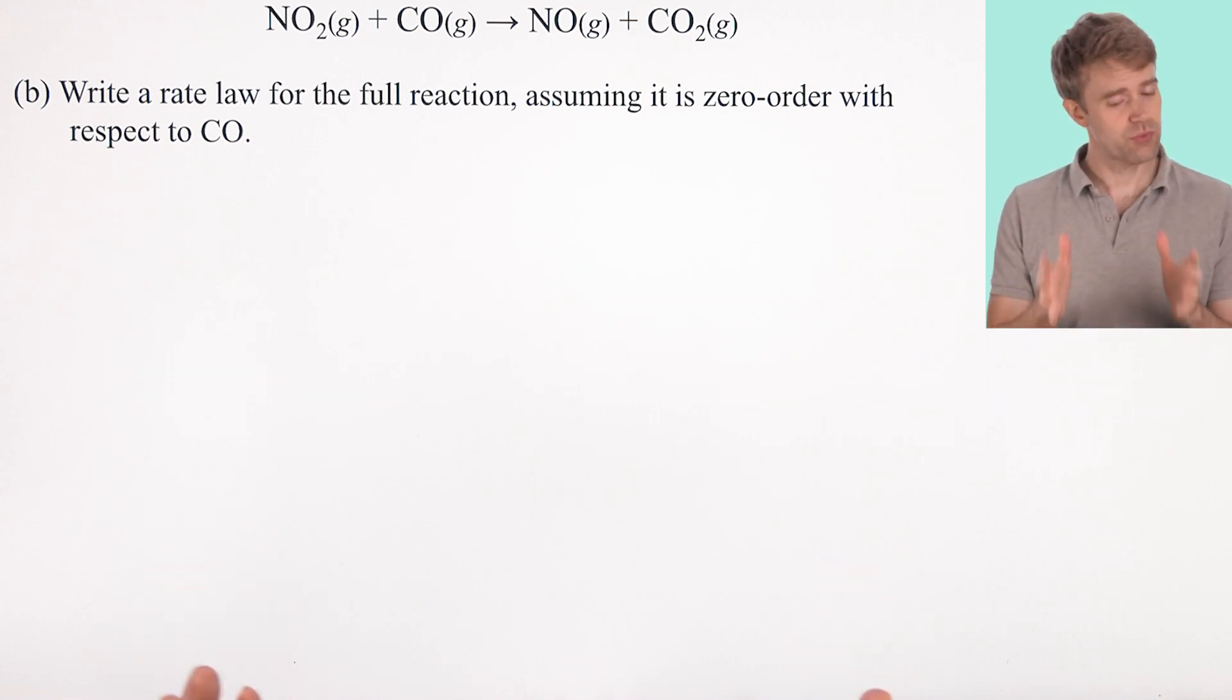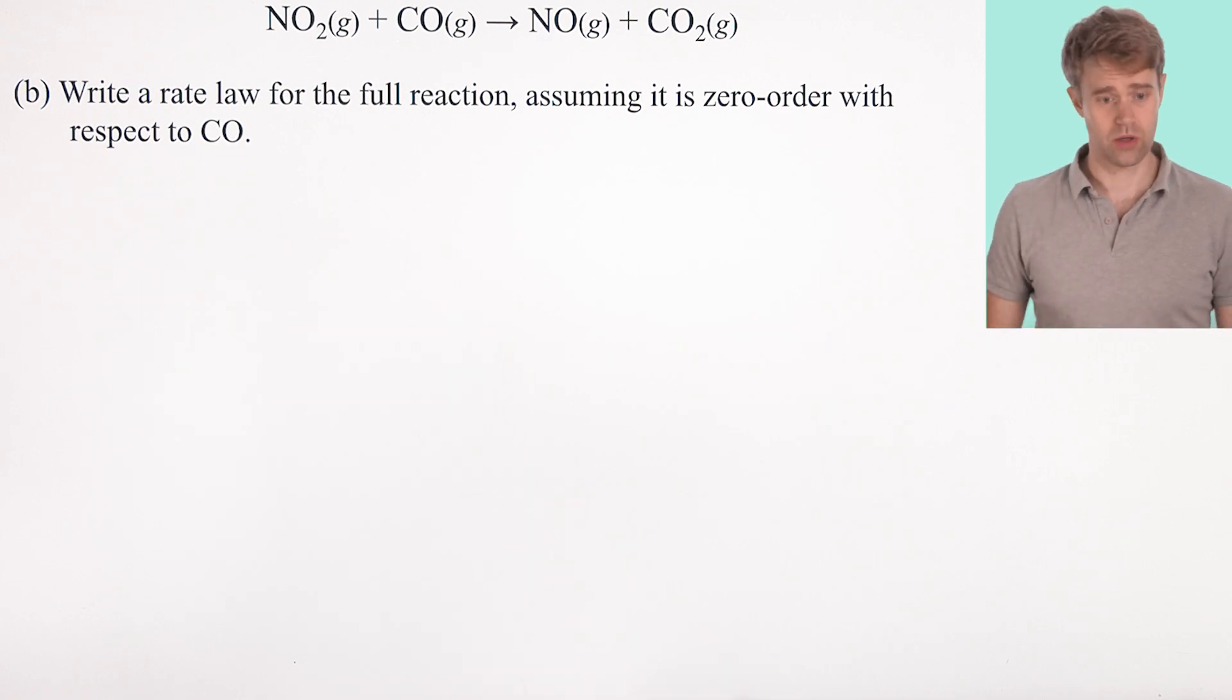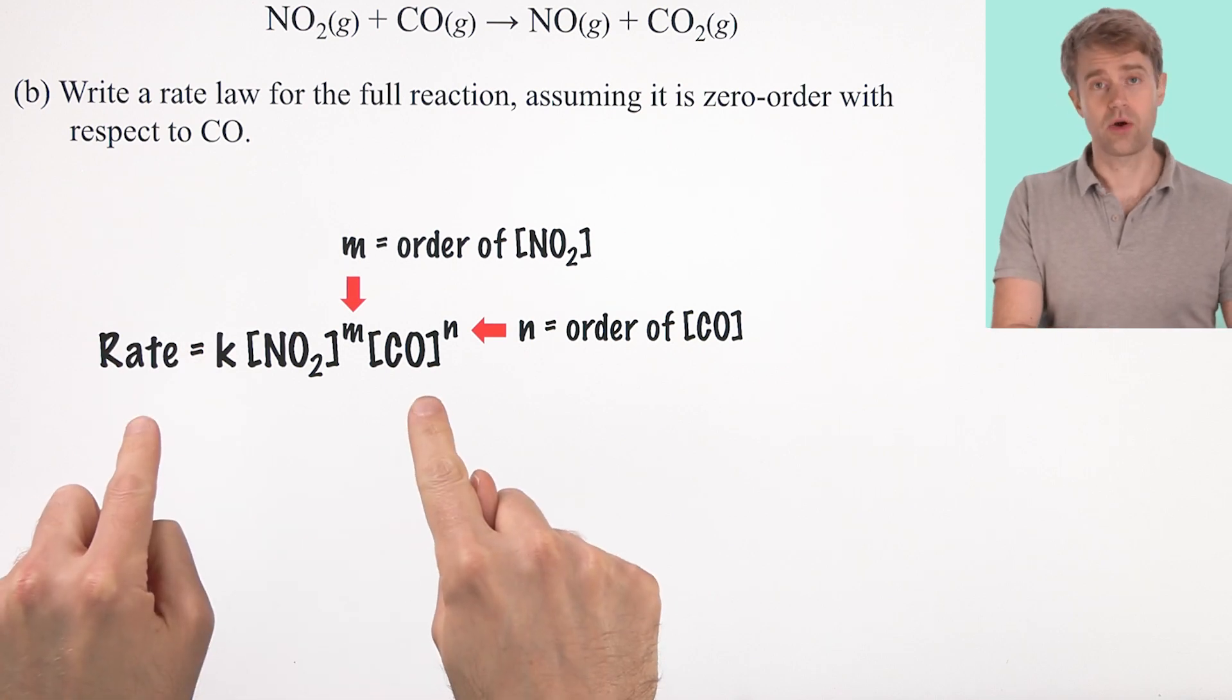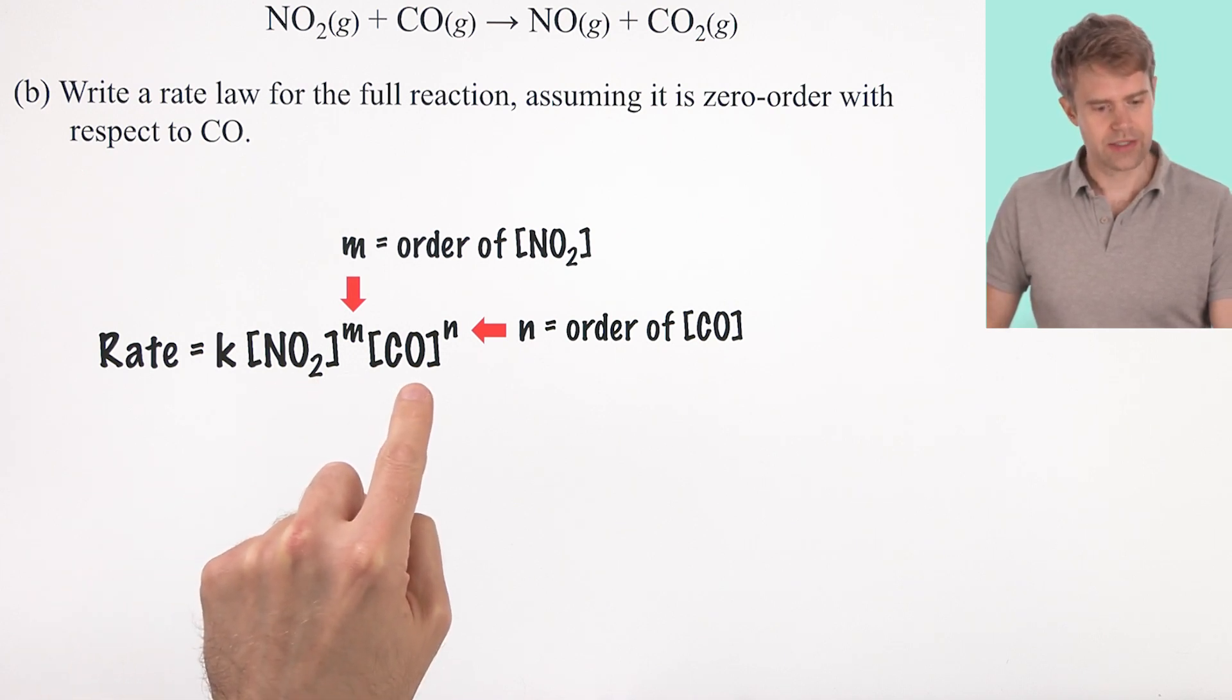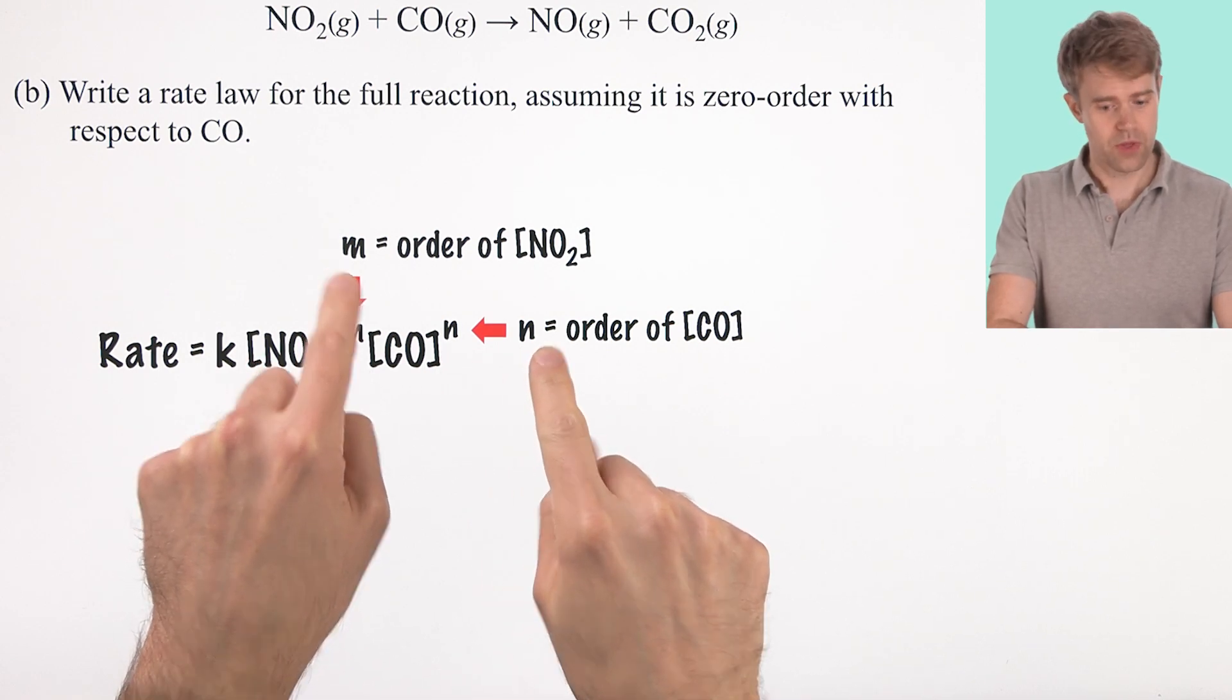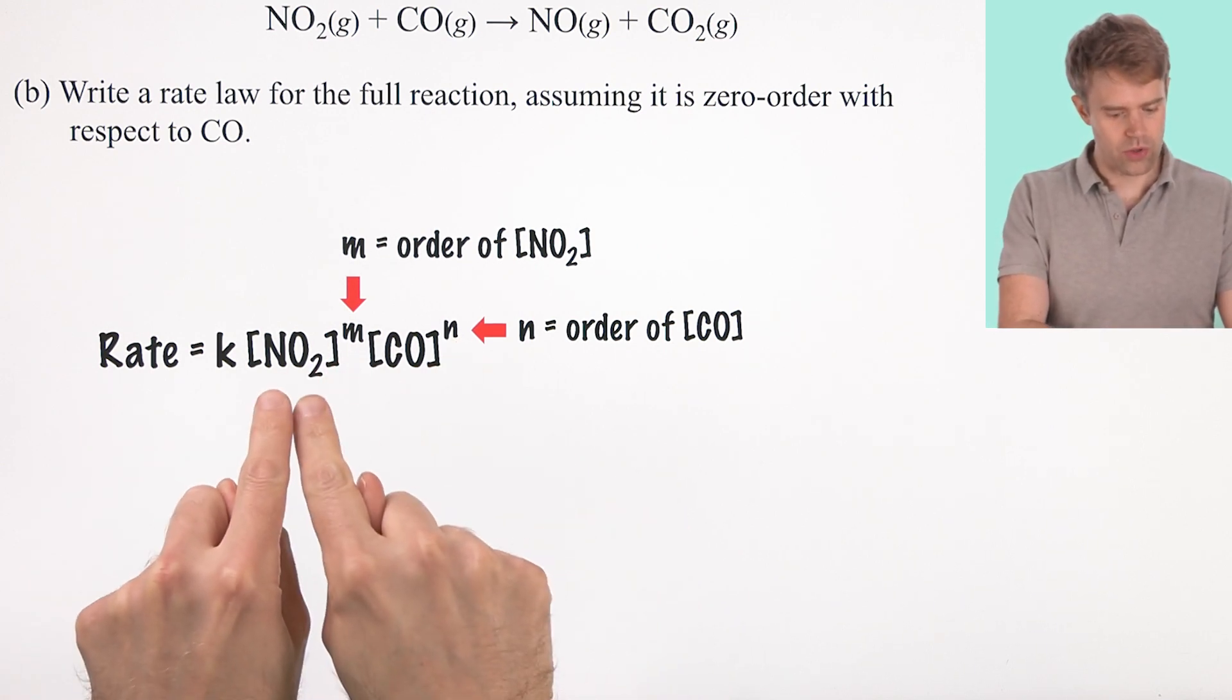Let's move on to part B. This one's pretty straightforward. Write a rate law for the full reaction assuming it's zero order with respect to CO or carbon monoxide. Now, here's the standard rate law equation. Rate equals K, that's the rate constant, times the concentration of each reactant raised to the exponent of its order.